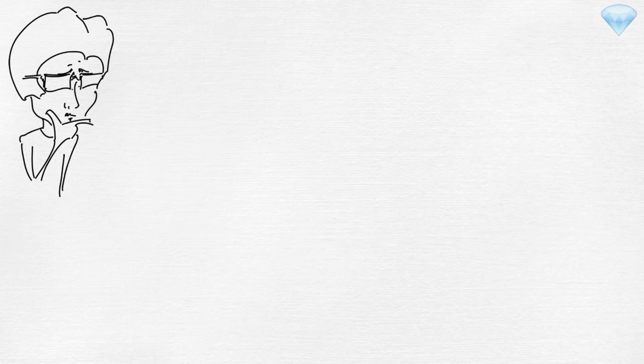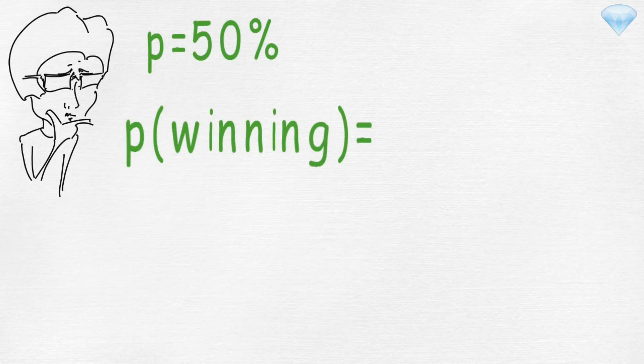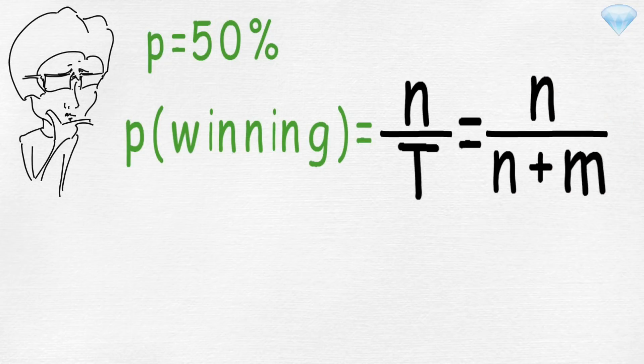But what if probability of success is not 47%, but 50%? Then we will have to follow a slightly different formula. Probability of winning equals n divided by t, which is equivalent to n divided by n+m. So the probability of getting t before reaching 0 is n divided by t.